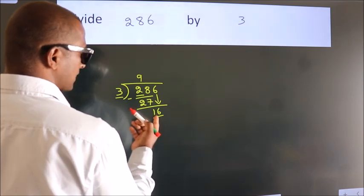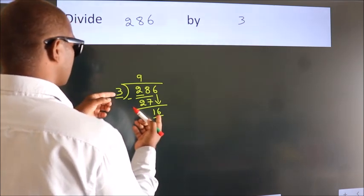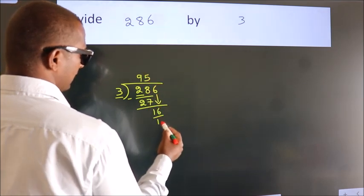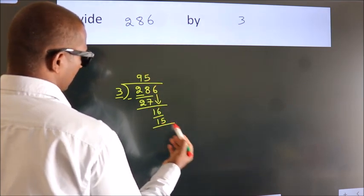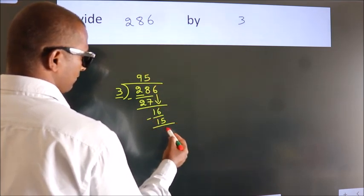A number close to 16 in the 3 table is 3 fives, 15. Now we subtract. We get 1.